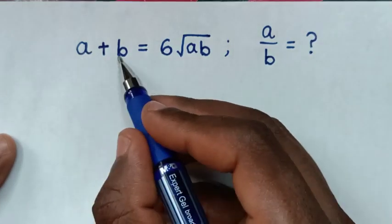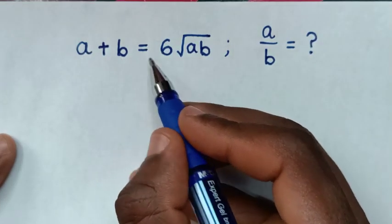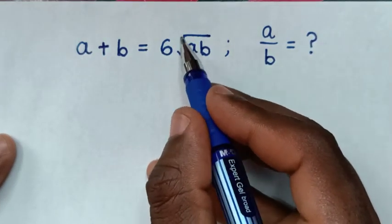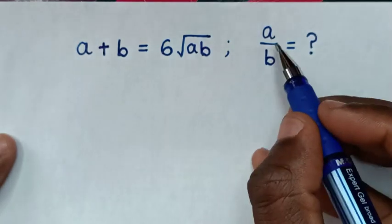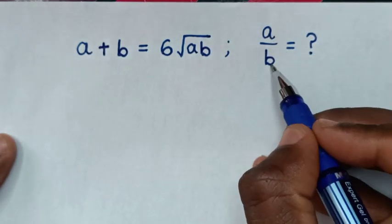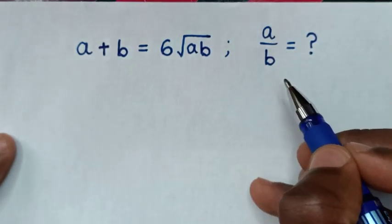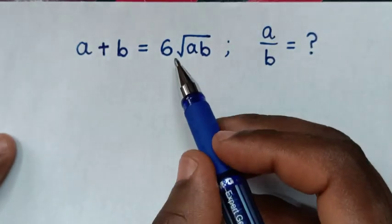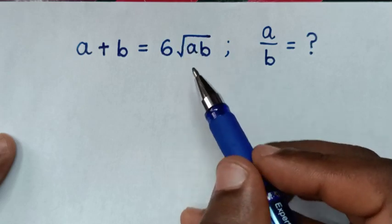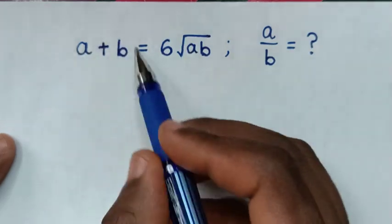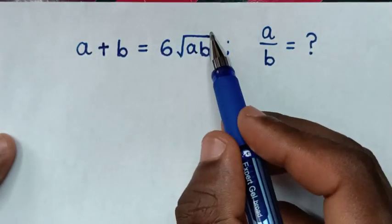How to solve a plus b is equal to 6 square root of ab, to find the value of a over b. So first, to cancel this square root, we will apply square in both sides.